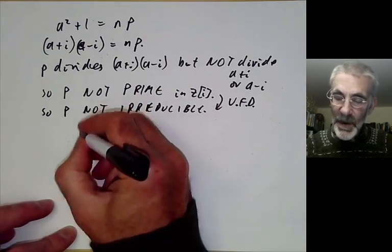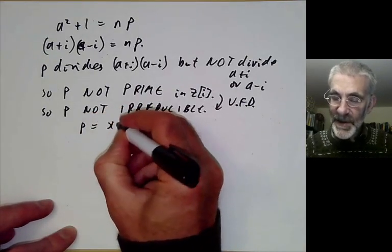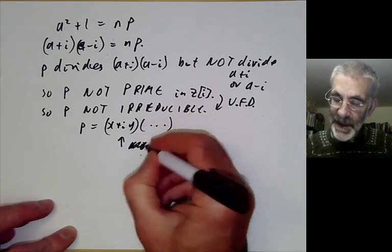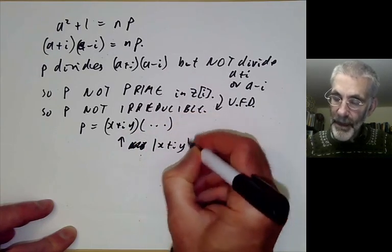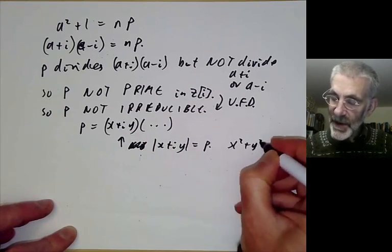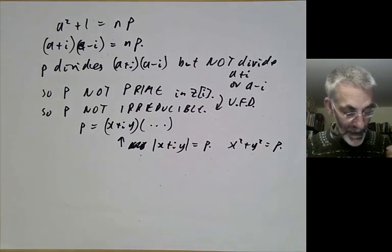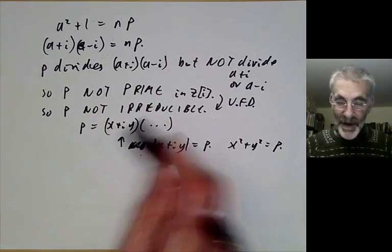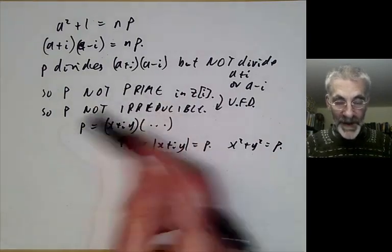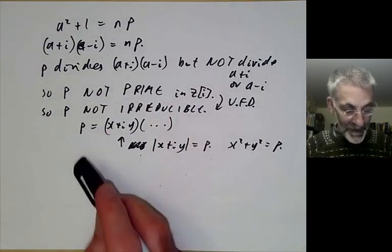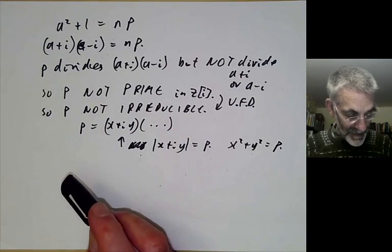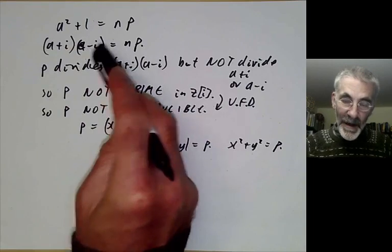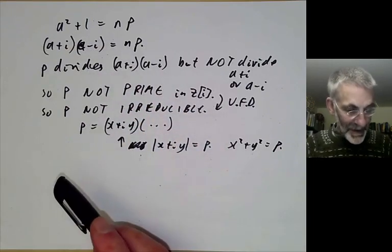Since p is not irreducible, we can write p equals (x plus iy) times something else, and this must have absolute value p, so x squared plus y squared equals p. This is one of Fermat's most famous theorems and one of the first really non-trivial results he proved in number theory — and we see it follows easily when you work with Gaussian integers.